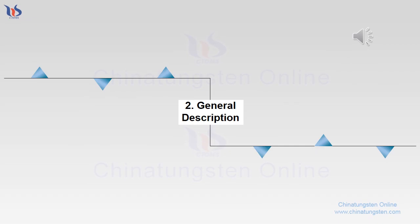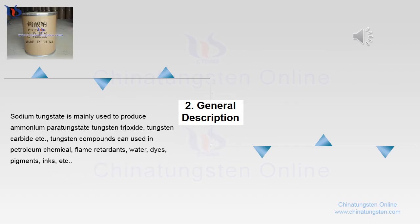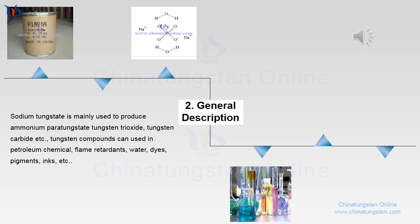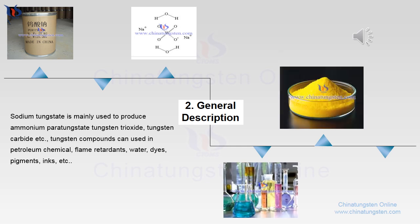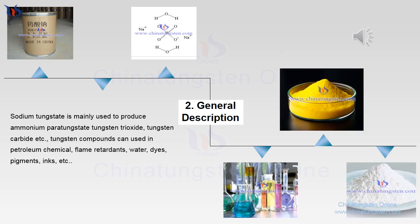General Description: Sodium tungstate is mainly used to produce ammonium paratungstate, tungsten trioxide, tungsten carbide, etc. Tungsten compounds can be used in petroleum chemical, flame retardants, water, dyes, pigments, inks, etc.